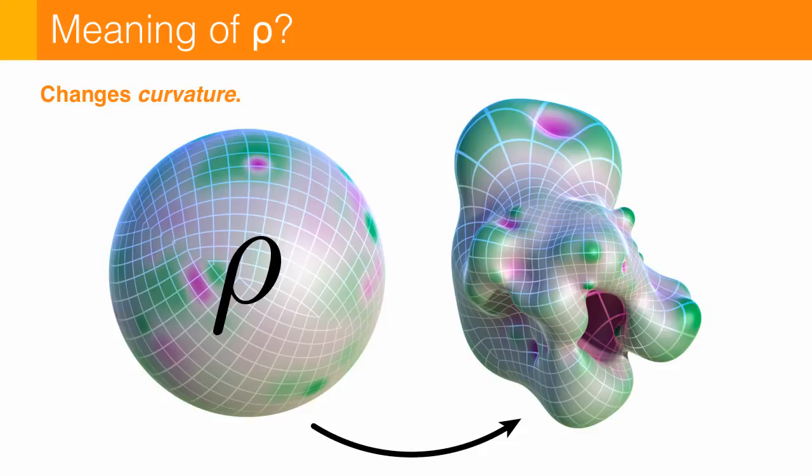And sort of as a side note here, this is actually pretty remarkable that we can prescribe something like curvature and get a surface by just satisfying a linear relationship. Normally, if you want to do something like prescribe curvatures, you have to minimize some kind of nonlinear energy.